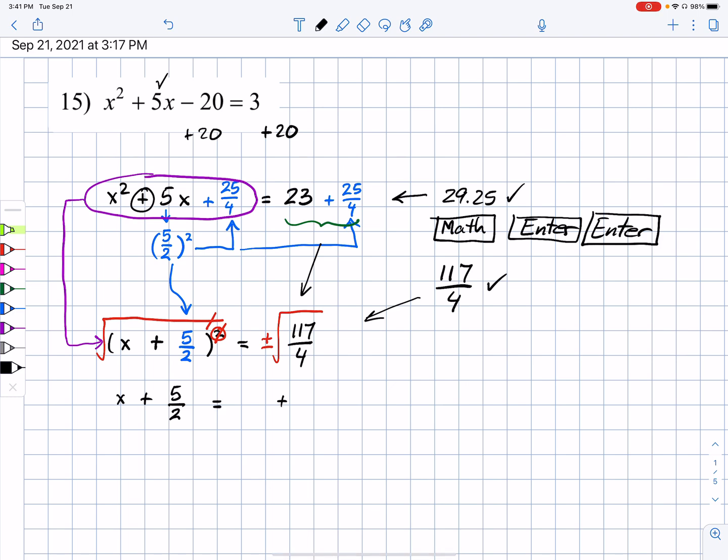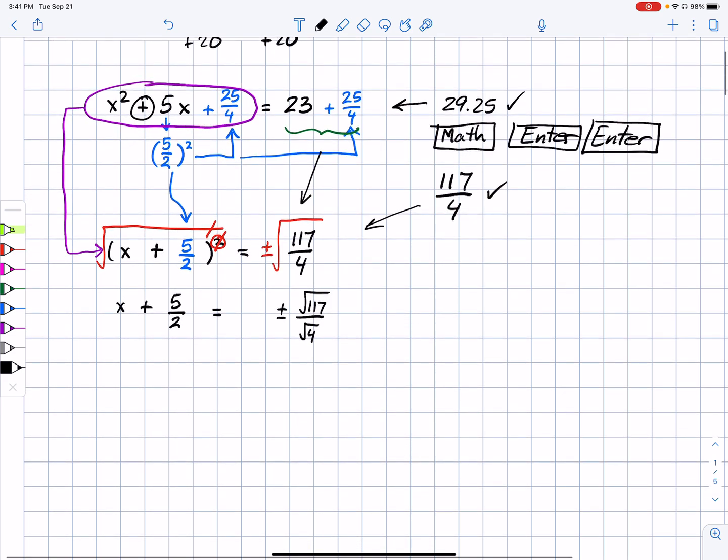On the right, I'm going to rewrite this fraction in a radical as a fraction of the two separate radicals. You can do that. You can break up fractions that way if they land inside of a radical. And that's nice. And this is kind of the reason we went back to fractions instead of using the decimal 29.25, is so we could just deal with plus or minus radical 117 over 2, because that's just 2 downstairs for square root 4.